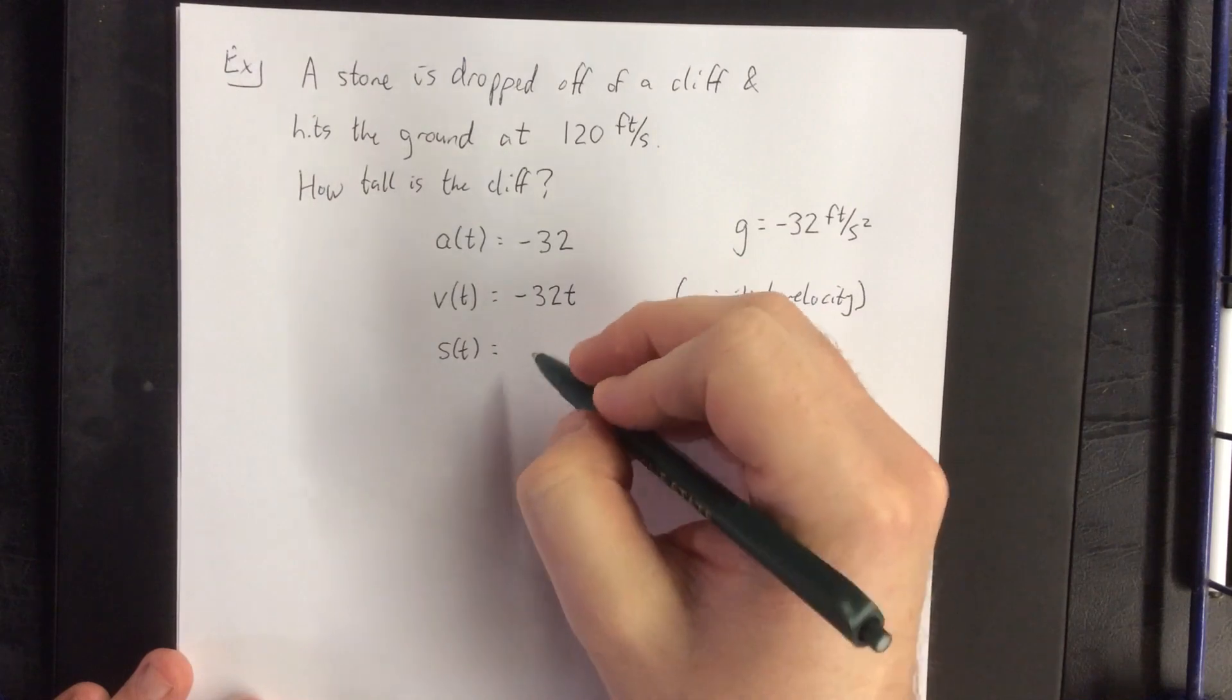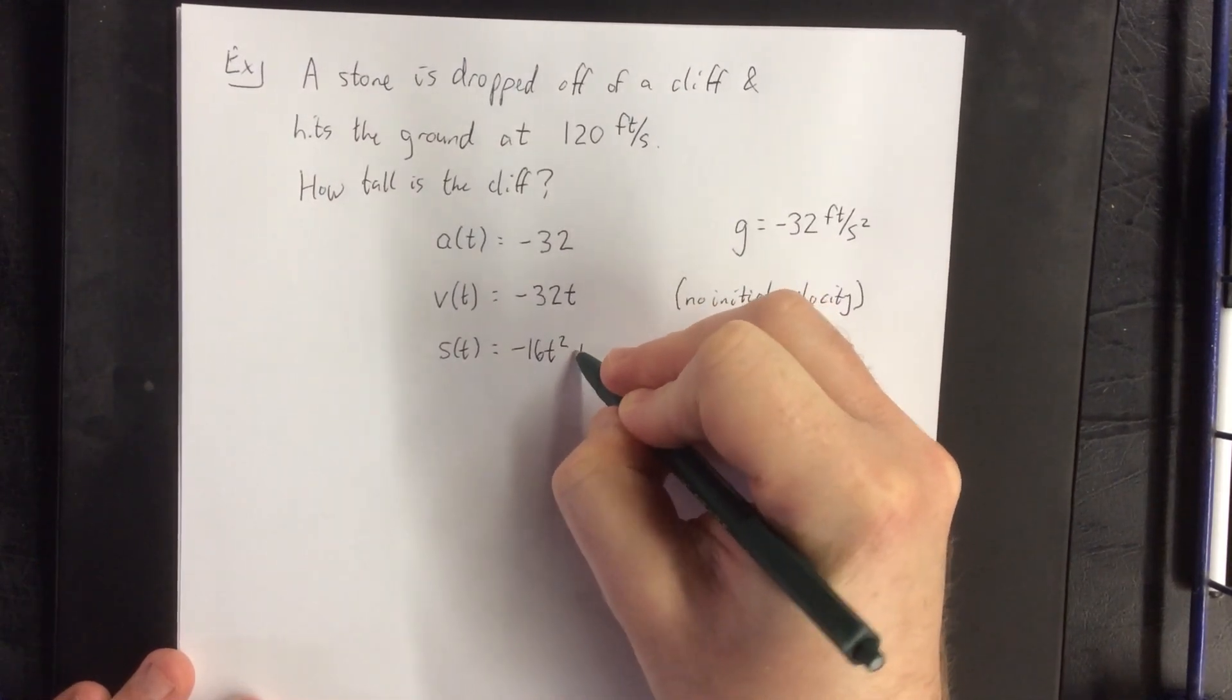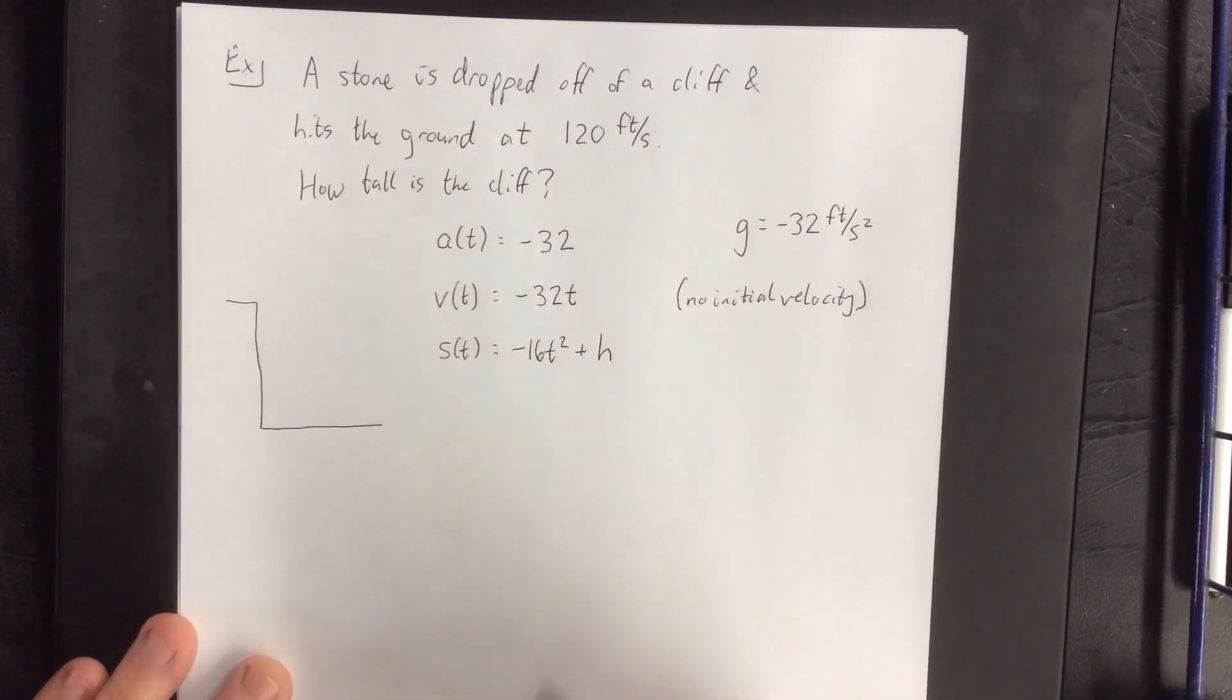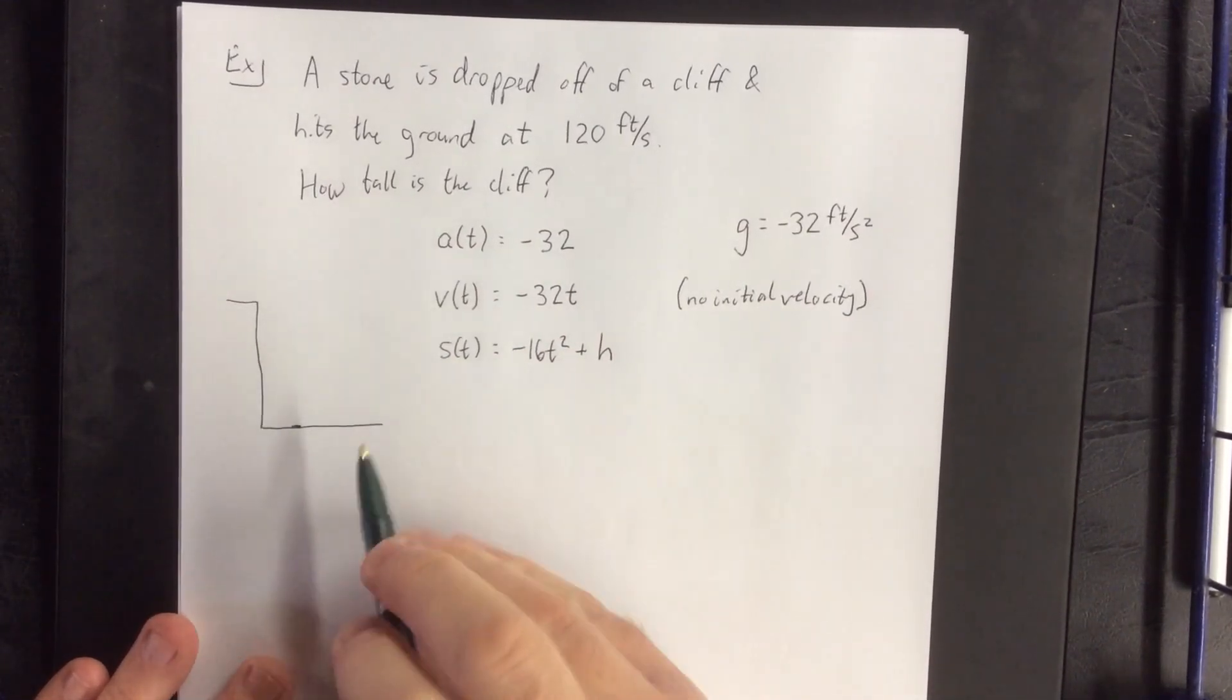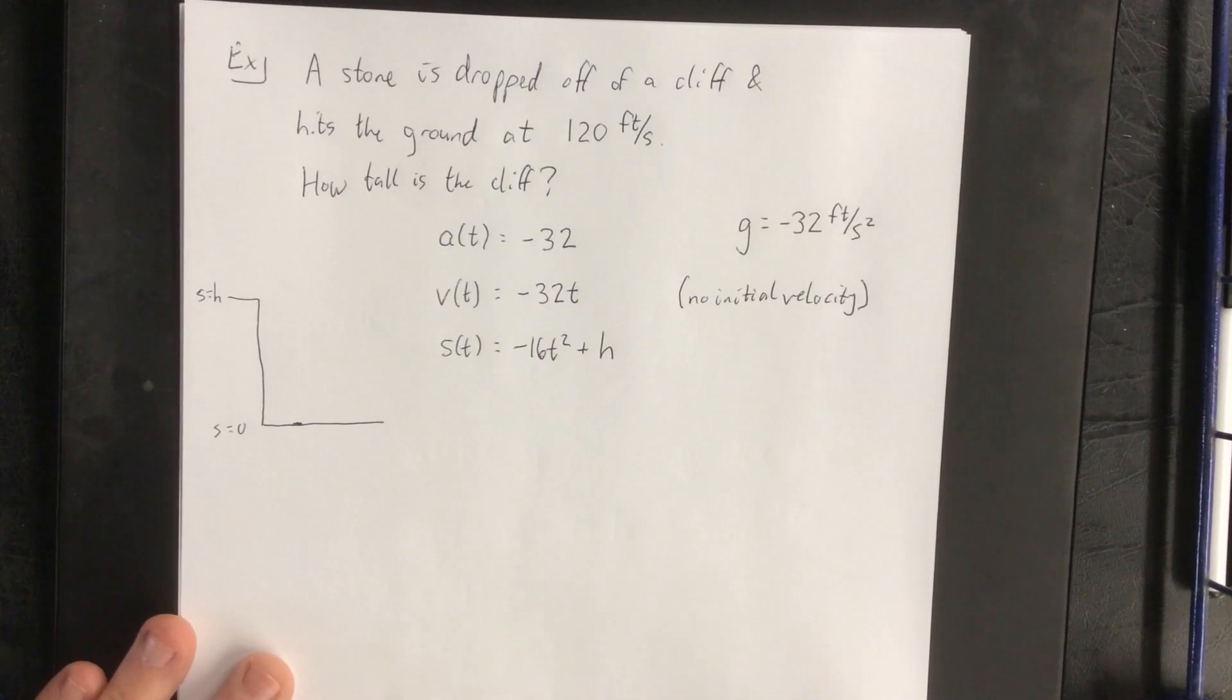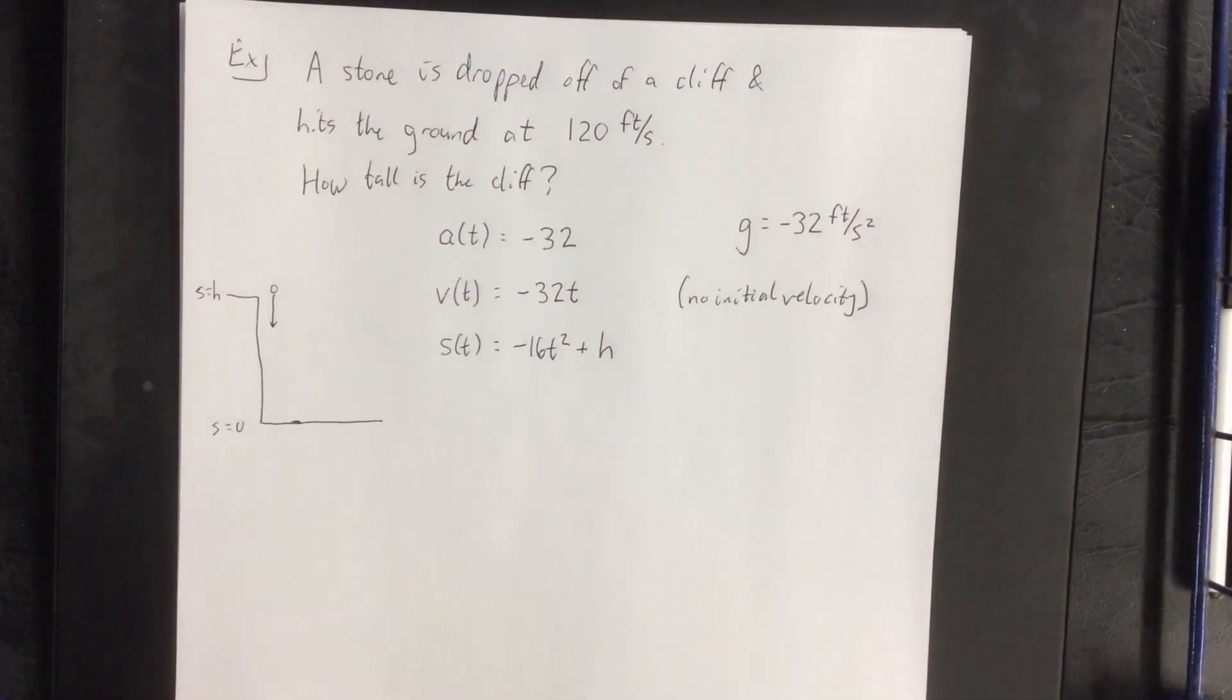Now, one more antiderivative. If I take half of 32, I'm going to get negative 16t squared plus whatever the height of the cliff was. We'll assume that the ground is a position of zero, and the top of the cliff is going to be a position of h. So a stone is dropped from up here and heads down there.